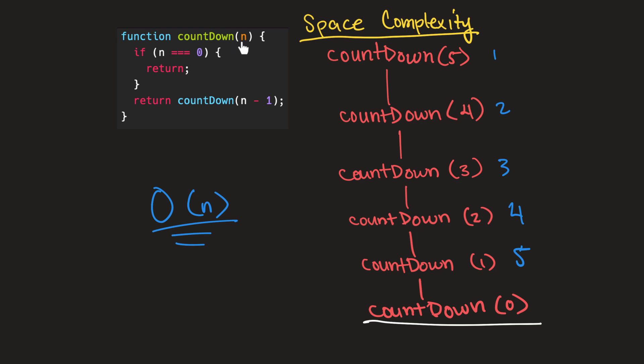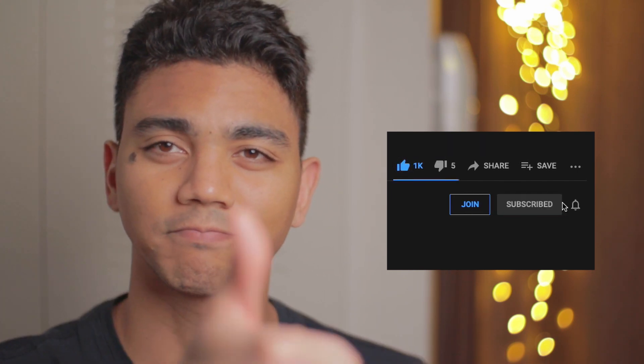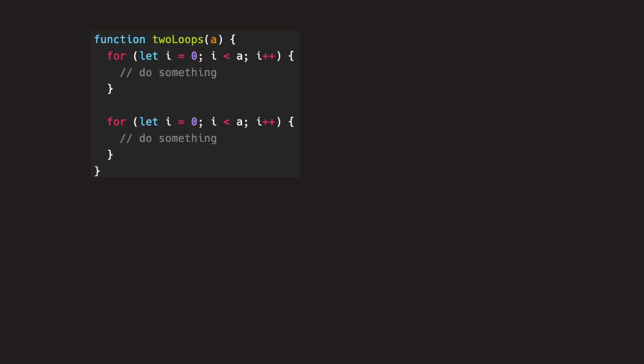It's going to scale linearly with the size of the input. So if we increase the size of this input, the space required to execute this function is going to scale proportionally with the size of the input. Now that we have an understanding of space complexity, we can get into some common mistakes that people make with big O.